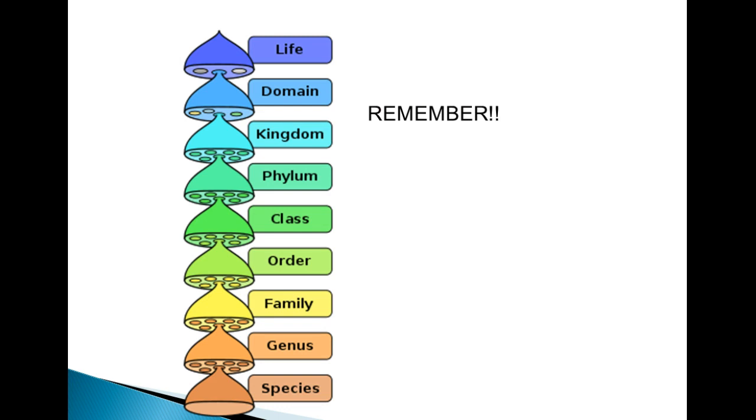We now must add a domain to the top of the classification line, which changes the way we memorize their order. Any one of these ways to remember the proper order will do. Dear King Philip came over for good spaghetti. It used to be King Philip came over for good spaghetti, but now we have to add the Dear. Or you could make up your own. However, you need to know their proper order. You most likely learned this system without the domain category. Make sure you add it to your memory tool.